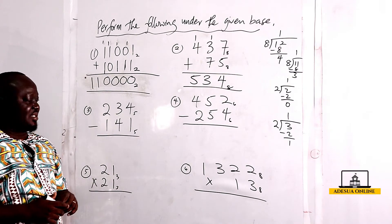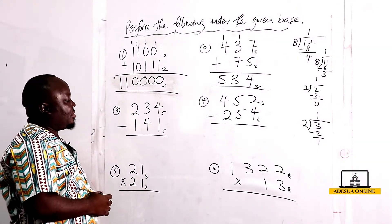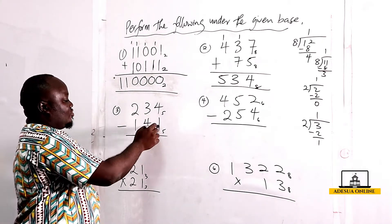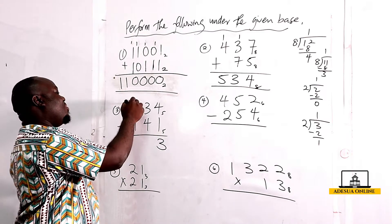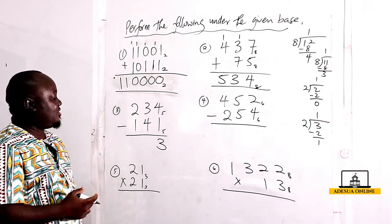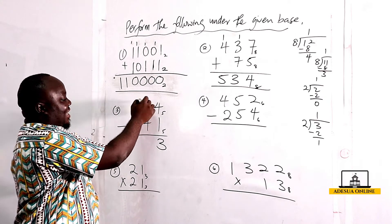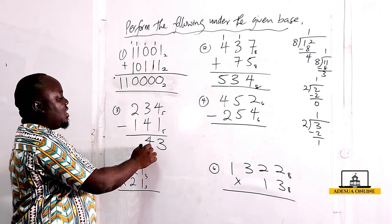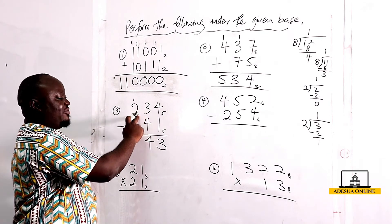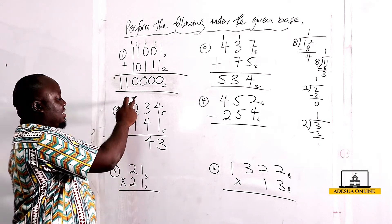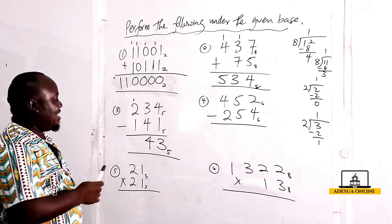Now when we come to subtraction, we are talking about 234 to the base five minus 141 to the base five. Four minus one is three, so I have three. Now three minus four cannot be done, so I'm going to borrow one from here. Because we are dealing with base five, what I borrow will be worth five. Adding five to three gives eight, and eight minus four gives four.